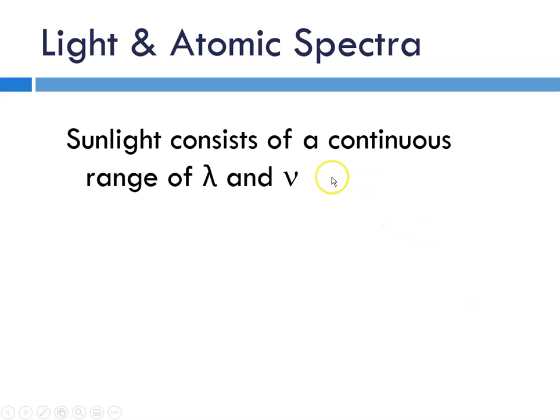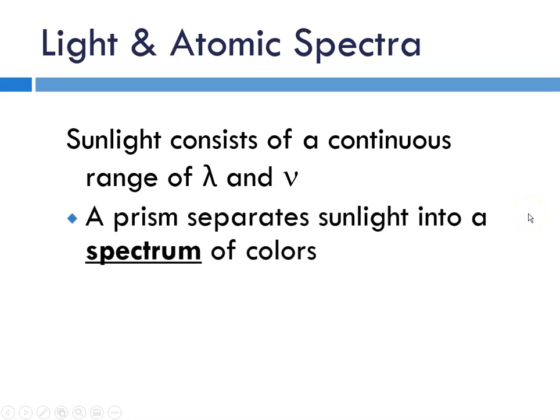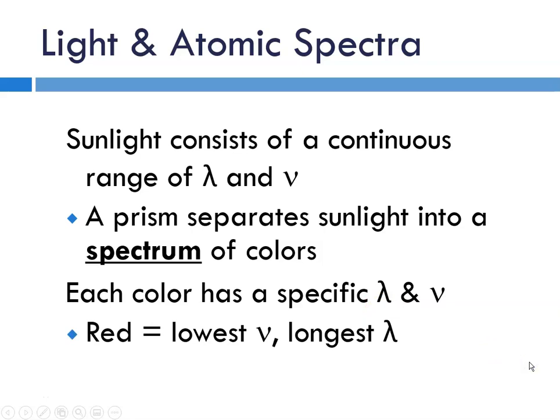Sunlight is a continuous range of wavelengths and frequencies. When we're seeing sunlight, we're seeing all of the various wavelengths, and a prism will separate sunlight into its individual wavelengths. That's what we're seeing when we see a rainbow. We're seeing that effect of all of the different wavelengths and frequencies of light being separated out. Each color that we see in a rainbow has a specific wavelength and frequency, where red is the longest wavelength and the shortest or lowest frequency, and blue is the highest frequency and the shortest wavelength.